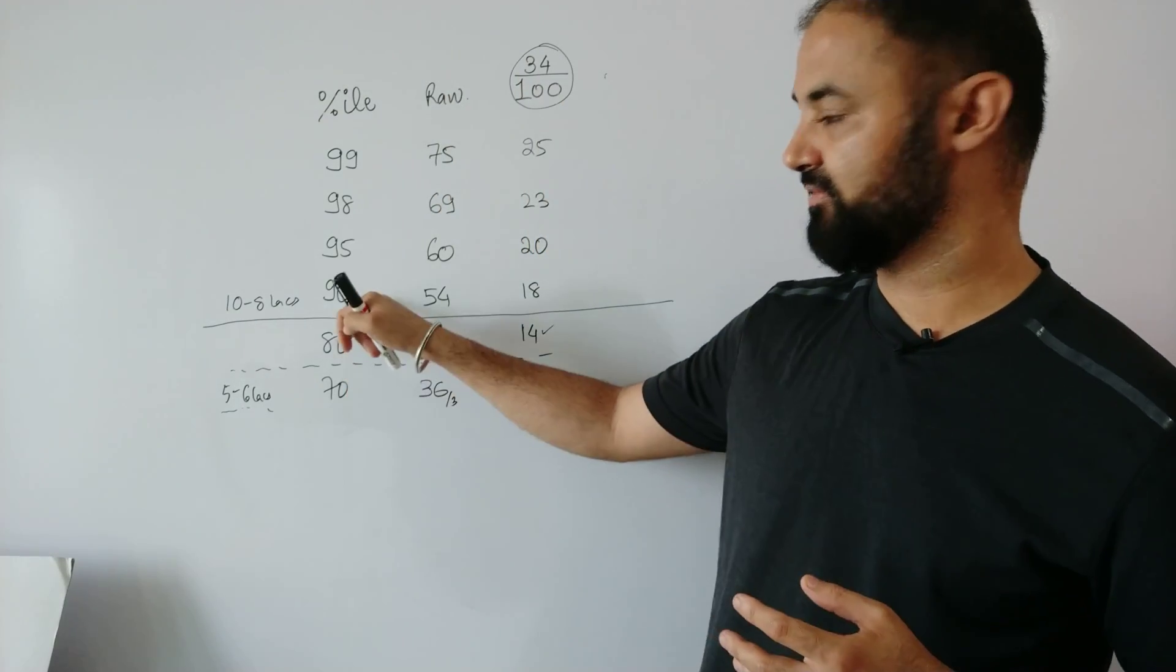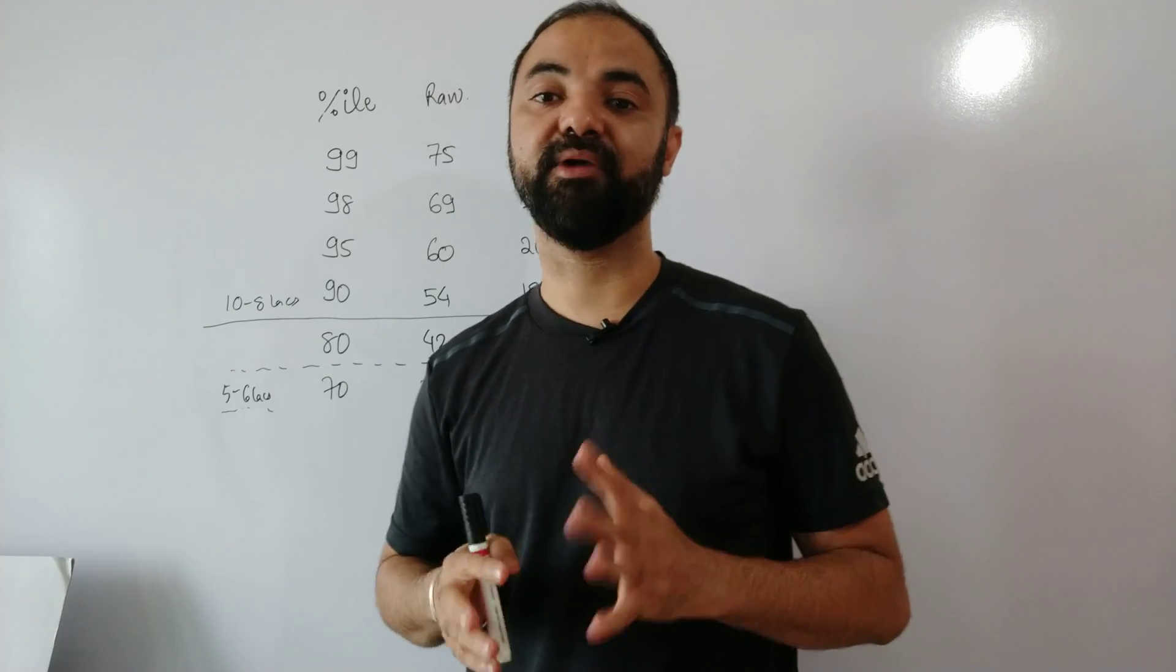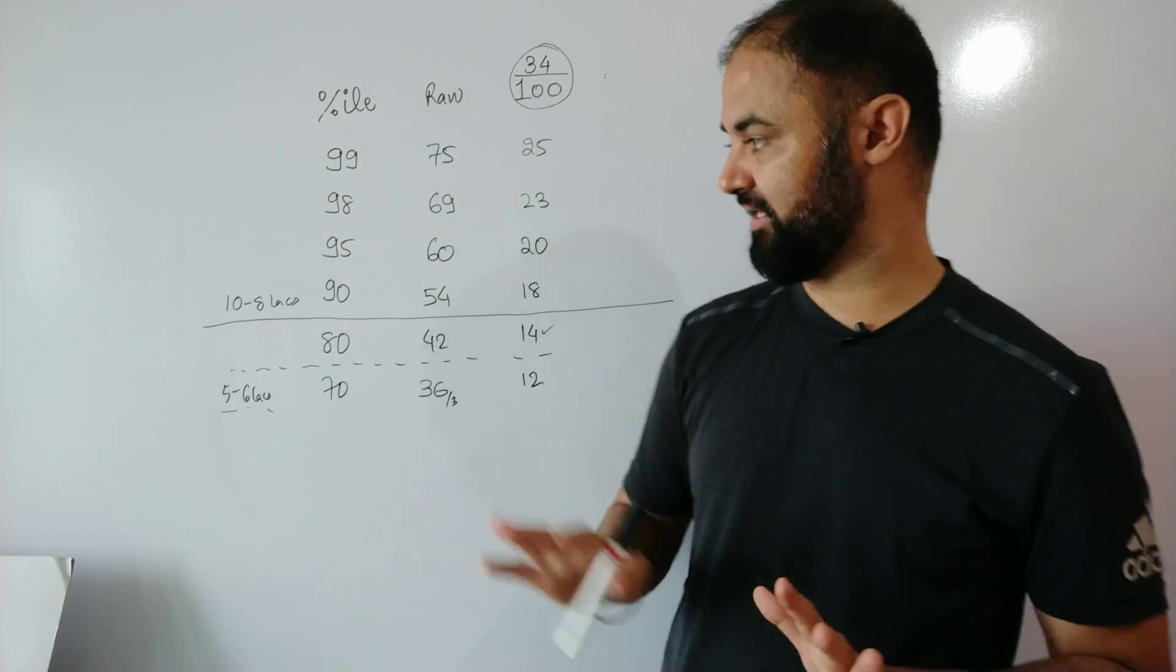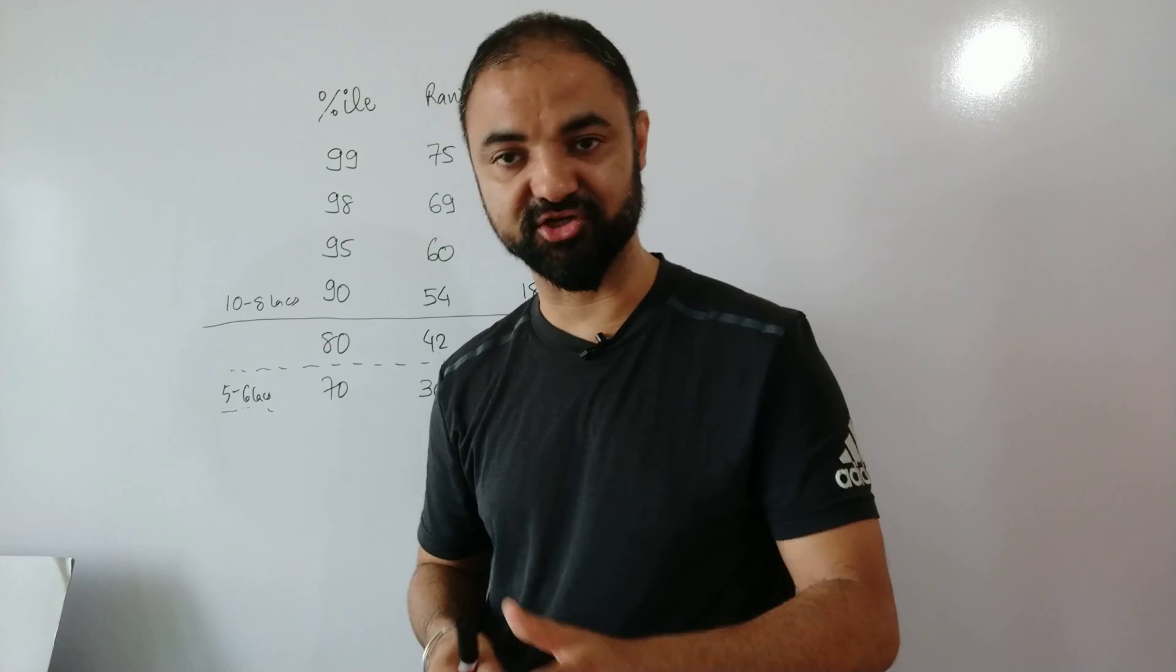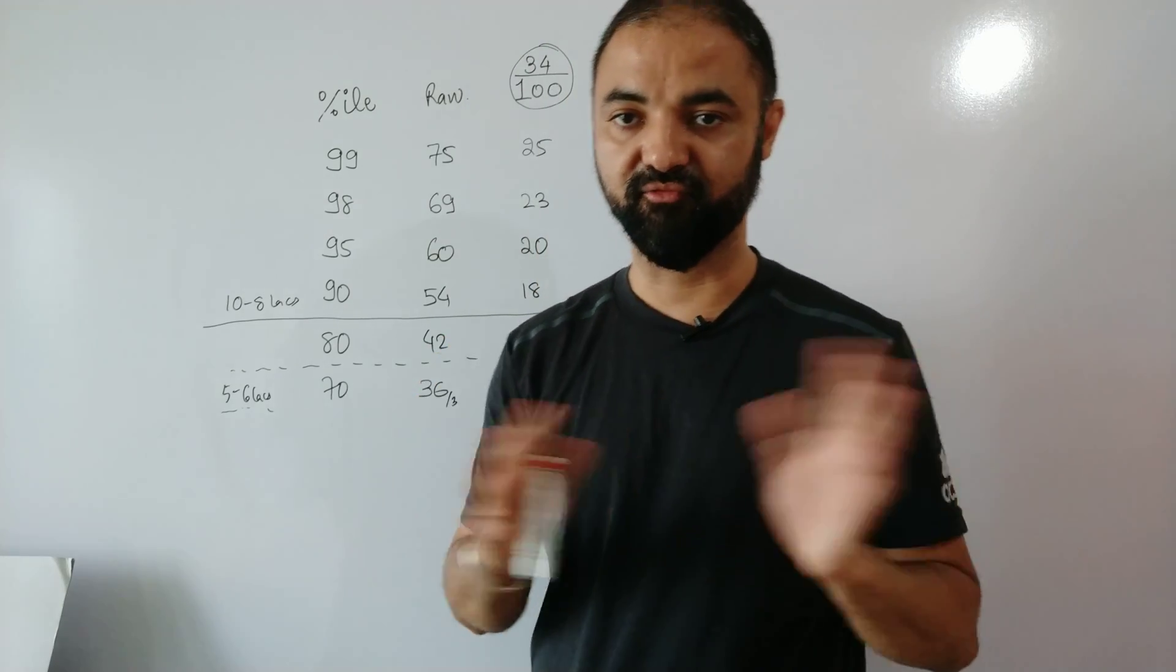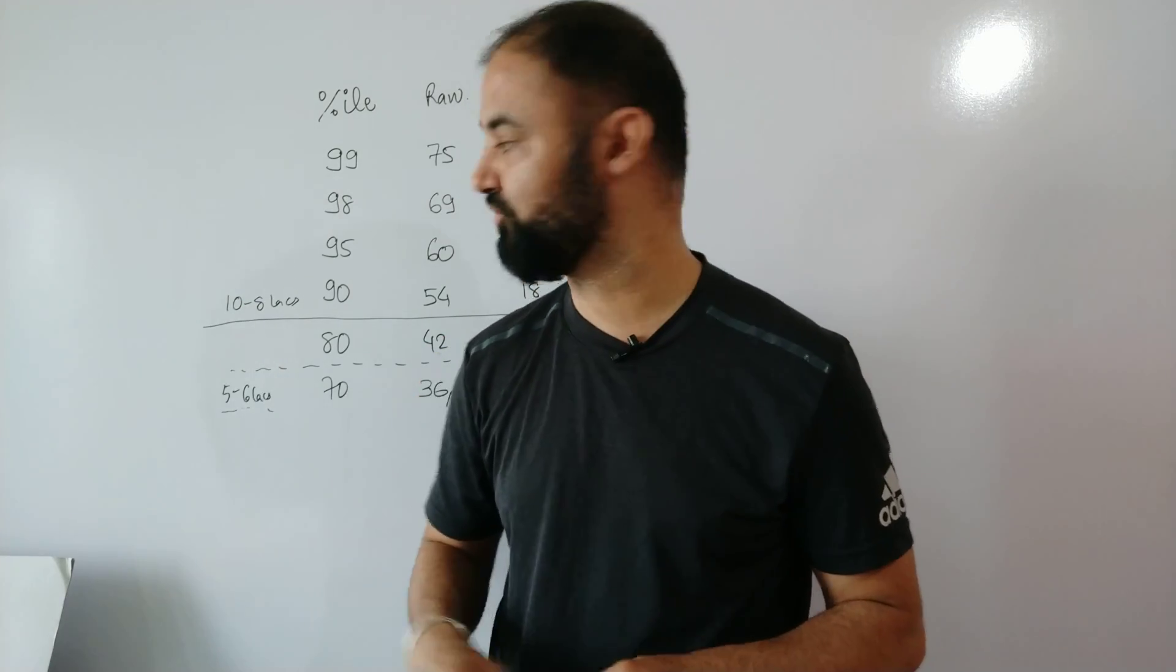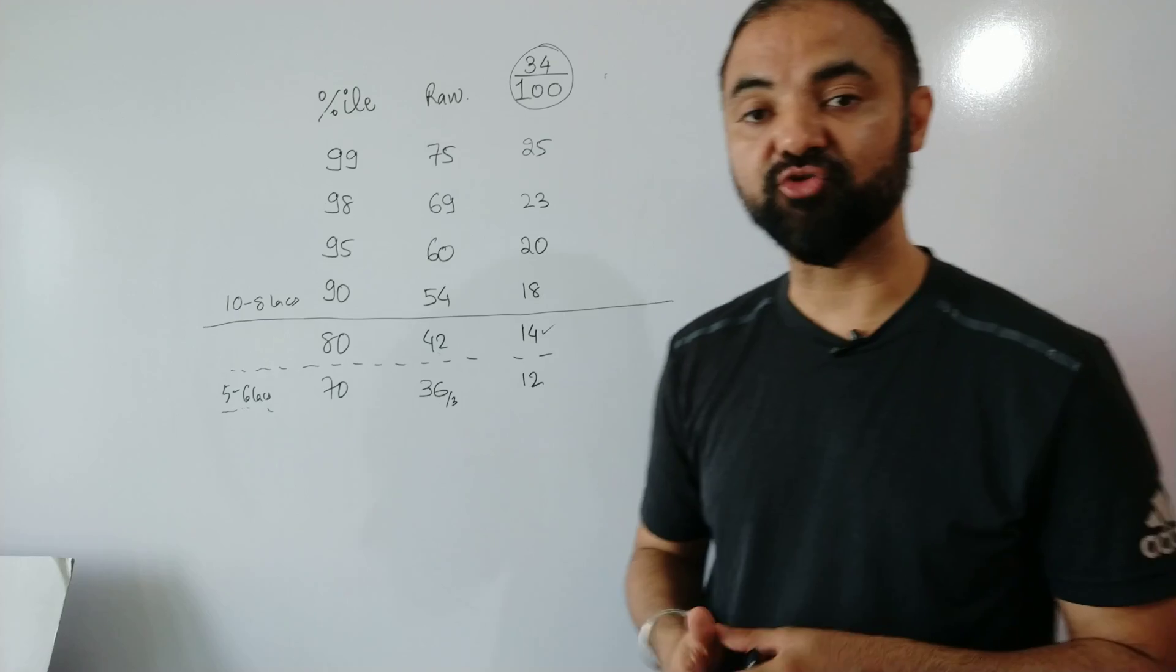Now all the IMT Ghaziabad, KJ Somaya, Welingkar, all the colleges will start giving a call at 85 plus, but to convert you need 90. 90 plus means you will convert one of the colleges. So if you are working, leave your job, focus on interview skills. You will convert a good college. And if you're a non-engineer, you will get all IIM calls.